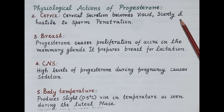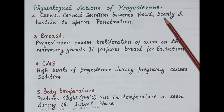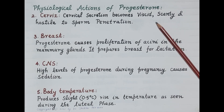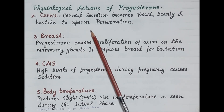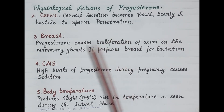Secondly, progesterone causes cervical secretion to become viscid — that is, thick and scanty. This prevents sperm penetration, making the cervical secretion hostile to sperm.